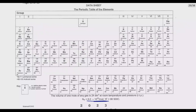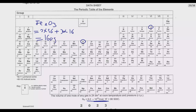Using the periodic table, the relative molecular mass of Fe₂O₃: iron is 56, there are two iron atoms so 2 × 56 = 112; oxygen is 16, there are three oxygen atoms so 3 × 16 = 48. Total = 160 g/mol. For carbon monoxide (CO): carbon is 12 plus oxygen is 16, giving 28 g/mol.